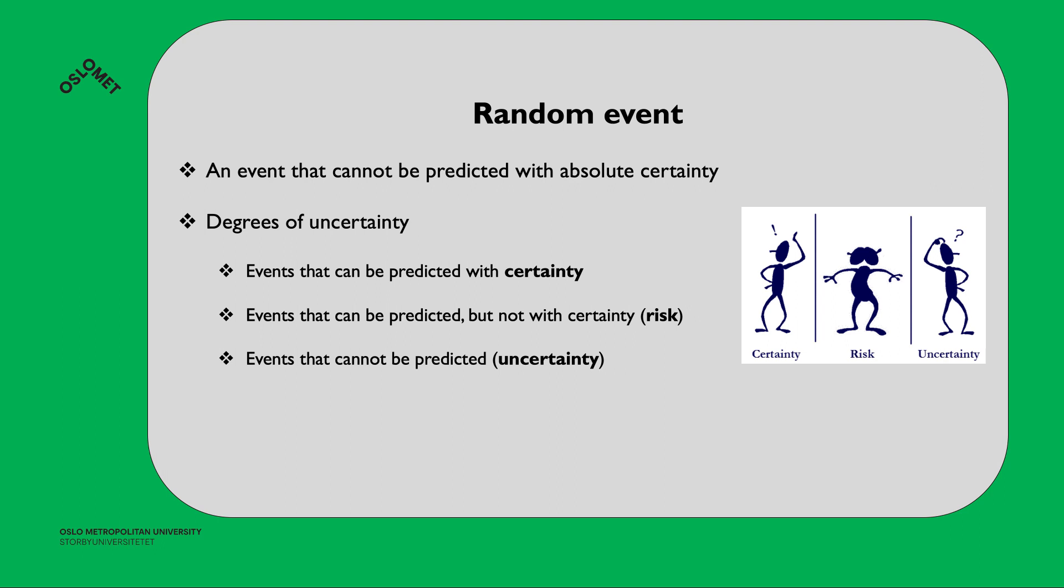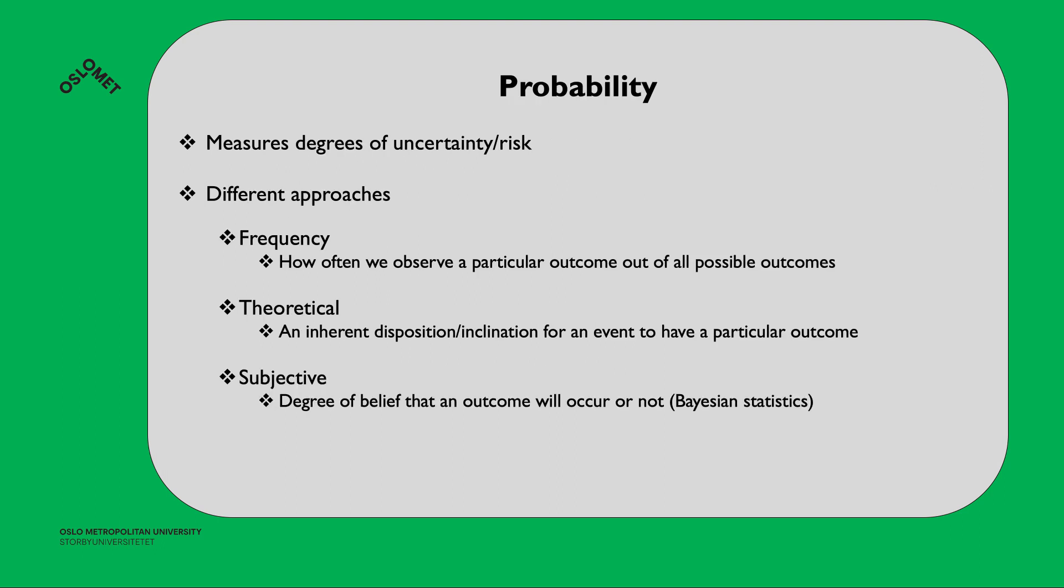Probability measures the degree of uncertainty or risk. We have different approaches to probabilities. You have a frequency-based approach - that's how often we observe a particular outcome out of all possible outcomes. You have a theoretical approach, which is an inherent disposition or inclination for an event to have a particular outcome. And you have the subjective approach, which is a degree of belief that an outcome will occur or not, called Bayesian statistics. We will work with the frequency-based approach.